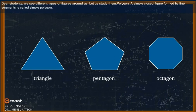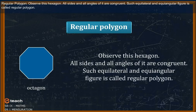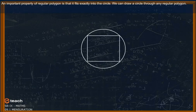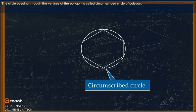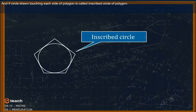Dear students, we see different types of figures around us. A simple closed figure formed by line segments is called a simple polygon. Observe this hexagon — all sides and all angles are congruent. Such an equilateral and equiangular figure is called a regular polygon. An important property of a regular polygon is that it fits exactly into a circle. The circle passing through the vertices of the polygon is called the circumscribed circle.